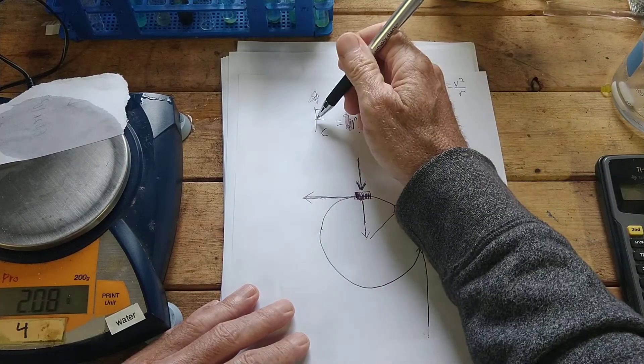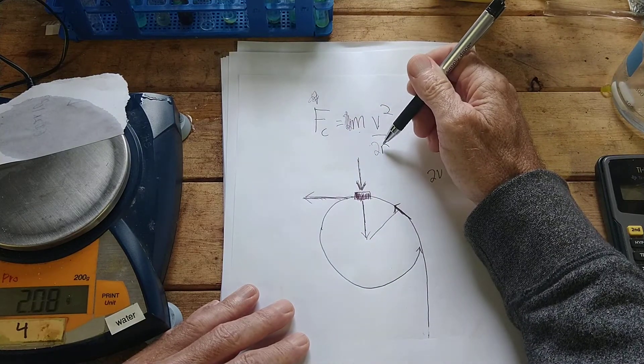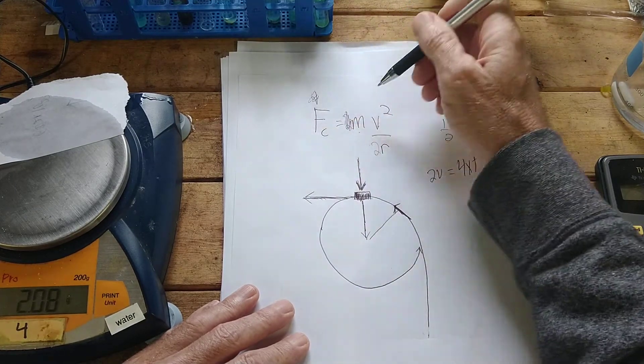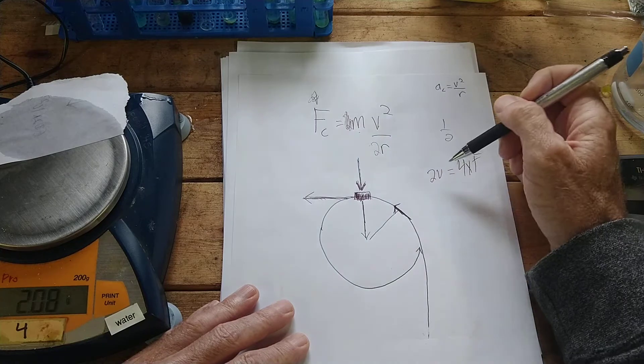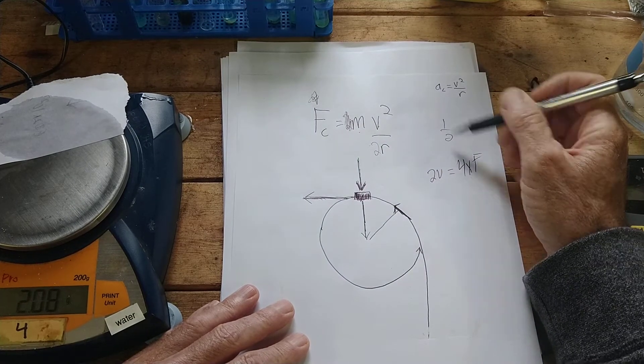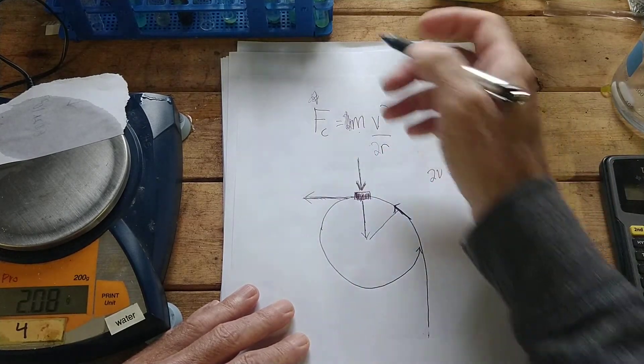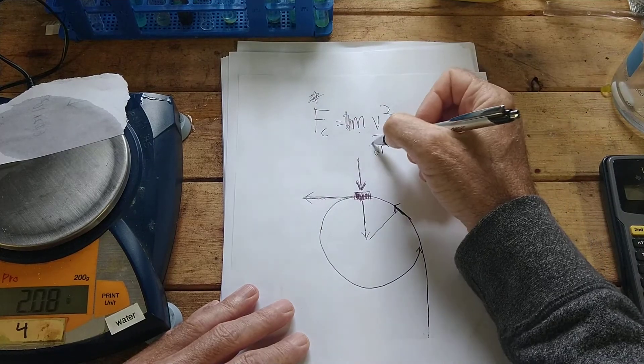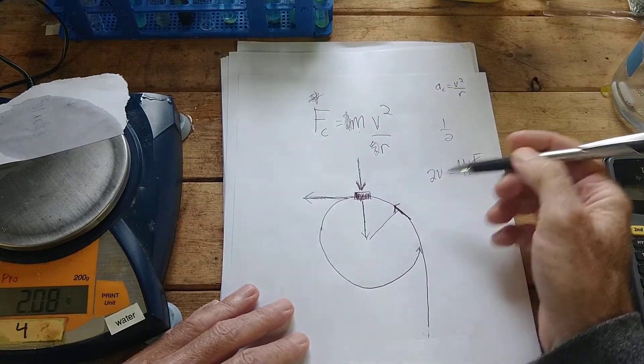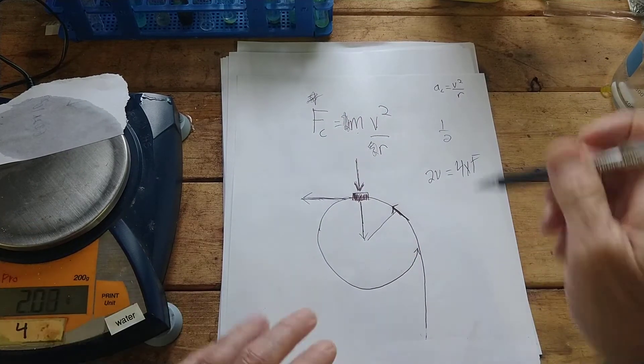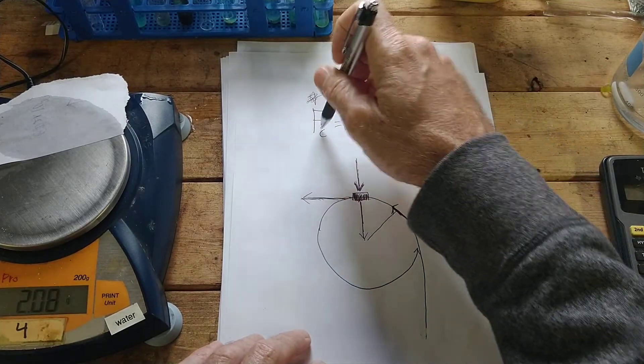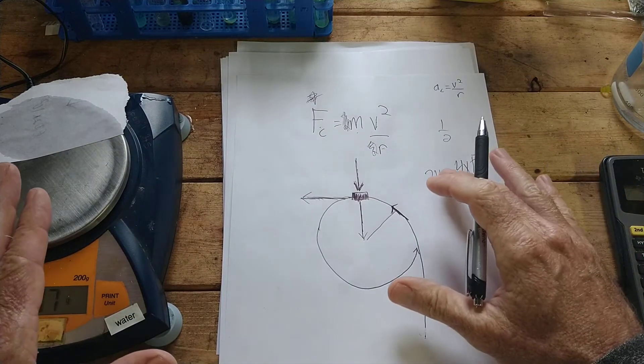So doubling the mass doubles the force. Doubling the radius halves the force. Doubling the velocity quadruples the force. So anytime when we've done many problems like this, they ask you about doubling part of a problem or tripling it. Just put a number in for that letter and it'll give you the answer.